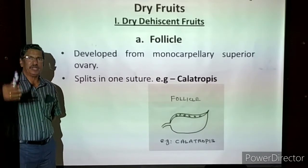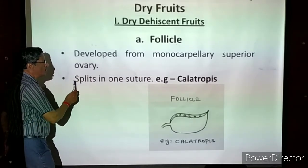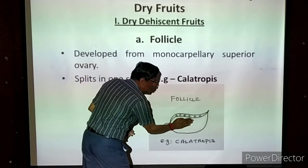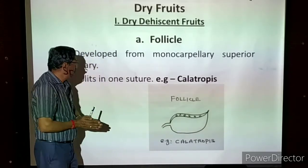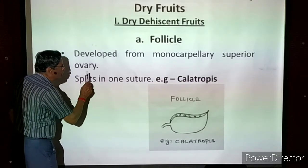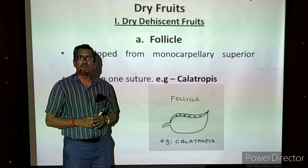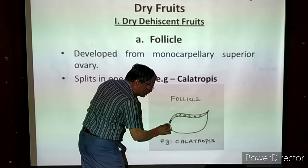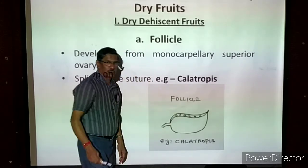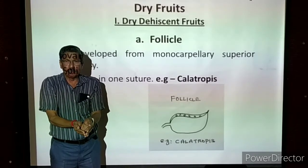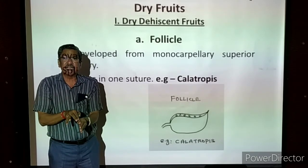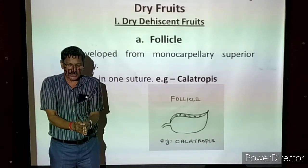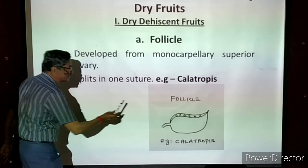In the follicle, the monocarpellary superior ovary — when it is drying and bursting, the pericarp has two side walls. At the time of drying, the pericarp splits along one suture — one margin. One margin is the suture and splitting takes place only at that one margin. Through this splitting all the seeds come out. The pericarp is like a boat shape — the margin fuses at the bottom suture. At the time of splitting, the bottom does not split; only at the fused margin (suture) it opens and all the seeds come out. That is called a follicle.